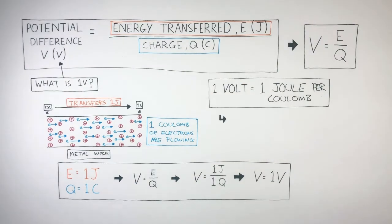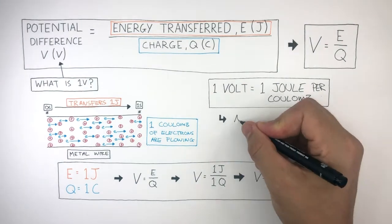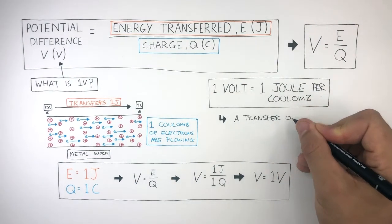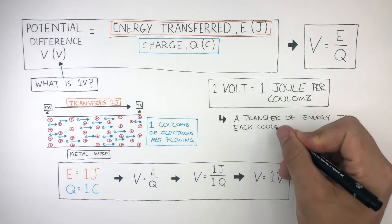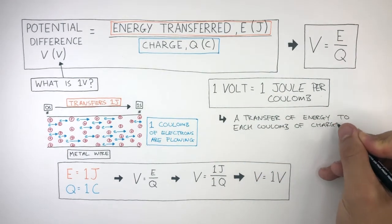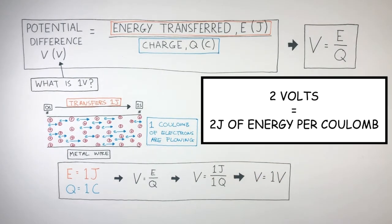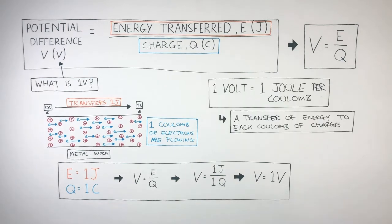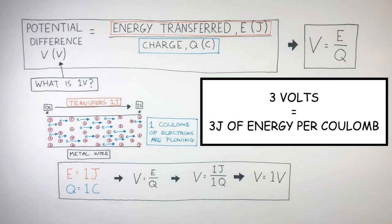So 1 volt is a transfer of 1 joule of energy to each coulomb of charge. So 2 volts is equal to 2 joules of energy per coulomb, and 3 volts is equal to 3 joules of energy per coulomb, and so on.